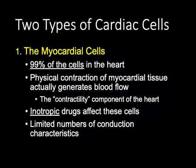There are two types of cardiac cells. The first is myocardial cells — the muscle cells of the heart — which make up 99% of all cardiac cells. The vast majority of cells in the heart contract and squeeze to create forward blood flow. These are the cells targeted by inotropic medications to increase contractile force. They have a limited number of conduction characteristics; they're designed primarily to squeeze, with conduction as a secondary function, though they do have the ability to generate and conduct impulses.